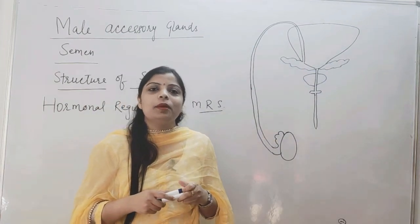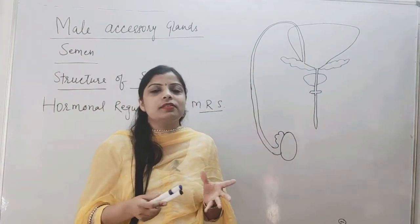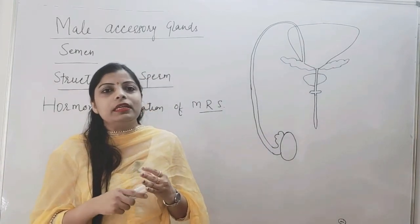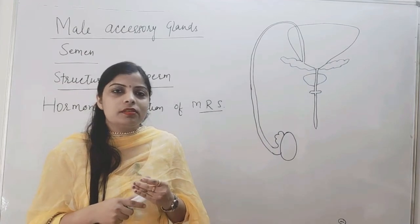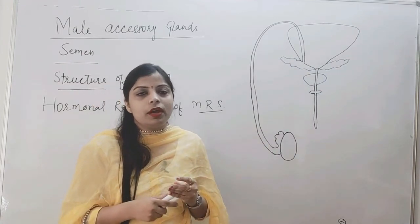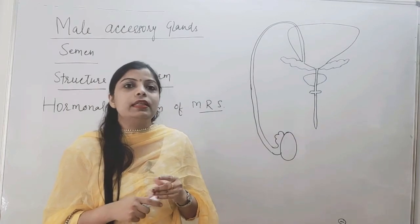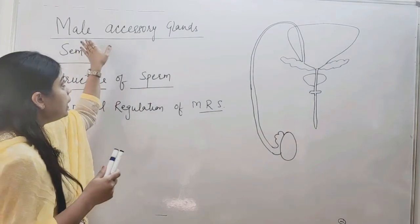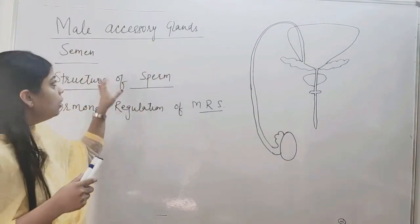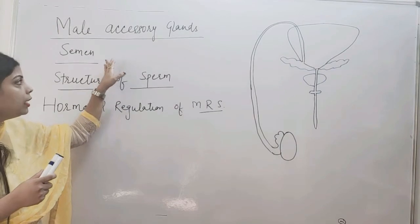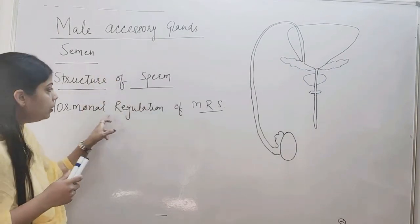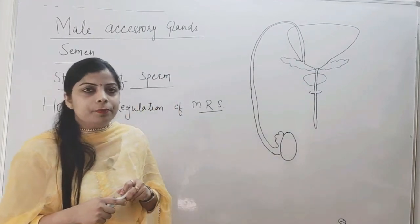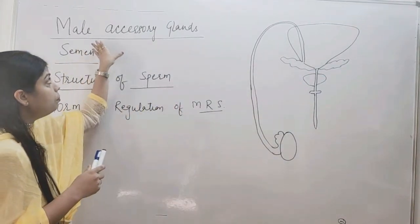Hello students. In the previous lecture we had discussed some part of the male reproductive system, including the structure of the male reproductive system and the process of spermatogenesis. In this lecture we are going to discuss about the male accessory glands, their secretion, what is semen, then the structure of sperm, and after that hormonal regulation of the male reproductive system. Let us start with the male accessory glands.